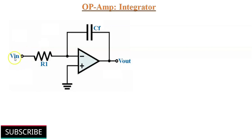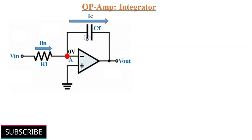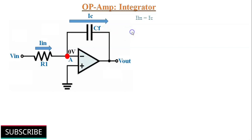When an input signal is applied to this circuit, since point A is at virtual ground, the voltage at the Inverting Terminal is always 0V. Because of the infinite input impedance of the Op-Amp, the input current that flows through R1 entirely flows through the feedback capacitor Cf. So, by applying KCL, we can say that Iin equals Ic.